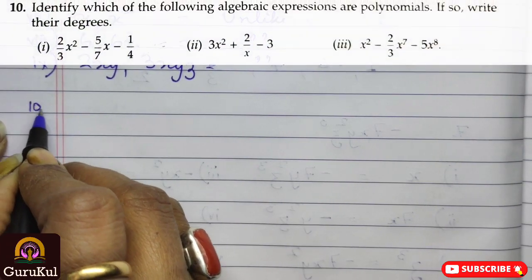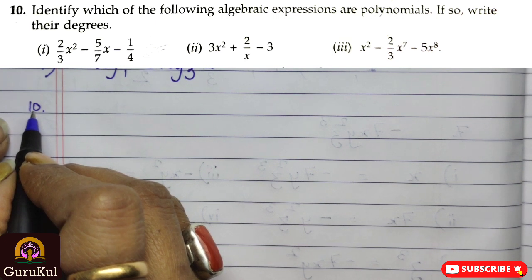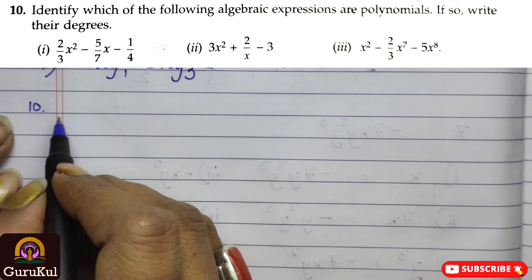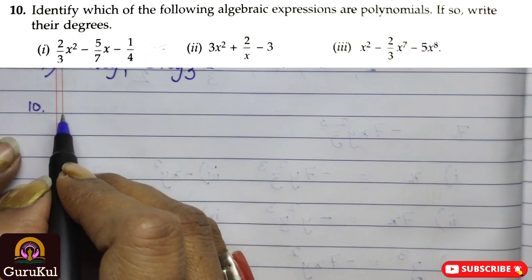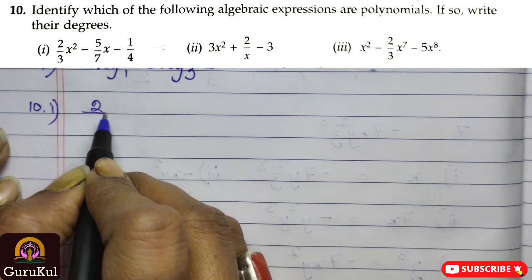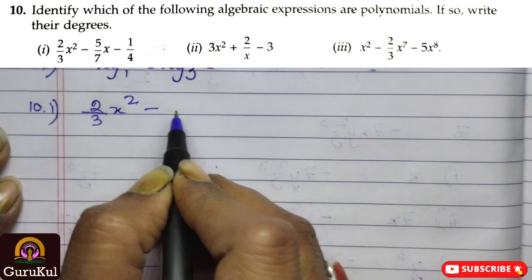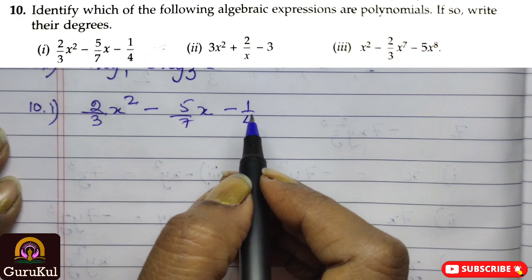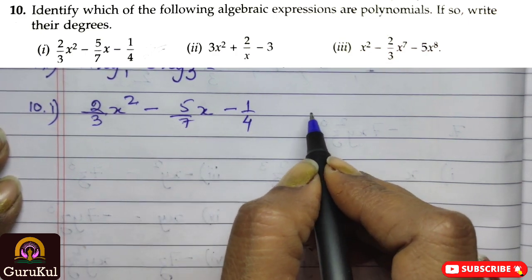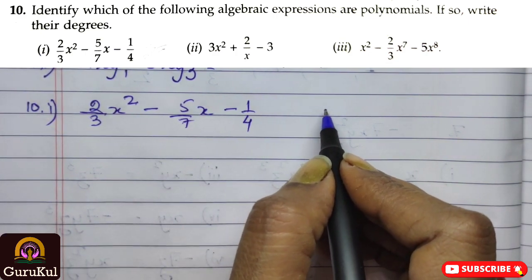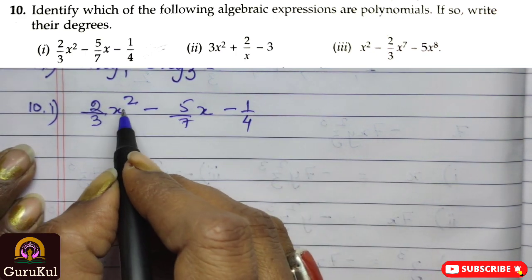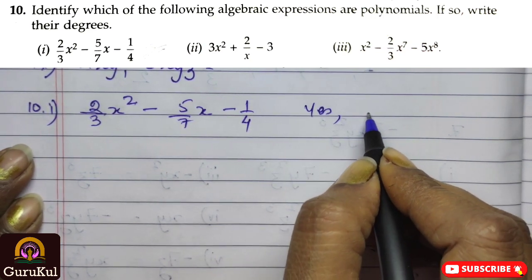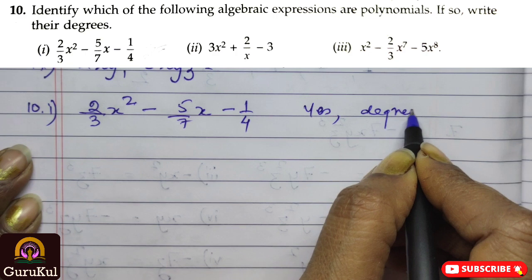Question number 10, we have to identify which of the following algebraic expressions are polynomial. And if so, we have to write the degrees. So, first one is, 2 by 3x square minus 5 by 7x minus 1 by 4. So, this is, yes, it is polynomial, and the degree is 2. 2 means the power of the literal, the highest power. So, yes, it is nominal, and the degree is 2.